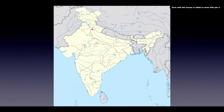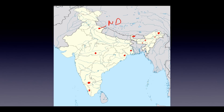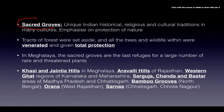On the map, you can locate: Nanda Devi and Khangchendzonga in the Himalayan region, Dehang-Dibang and Dibru-Saikhowa in the northeast, Manas in Assam, Nokrek in Meghalaya, Sundarbans in West Bengal, Simlipal in Odisha, Pachmarhi in central India, Nilgiris in the south, Agasthyamalai further south, and Gulf of Mannar on the southeastern coast. Studying from a map helps retention.